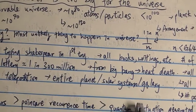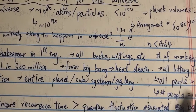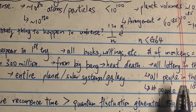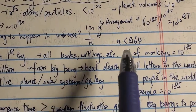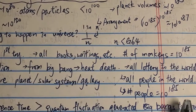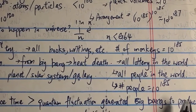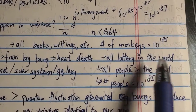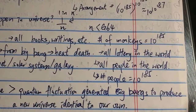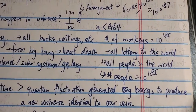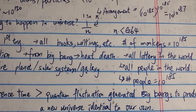What about a monkey not just typing Shakespeare, but typing every single book or writing that has ever been written? Well, n would still be way smaller than Graham's number. And what if we change the number of monkeys — not just one, but 10 to the 185 monkeys? That n would still be far smaller than Graham's number.